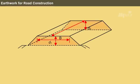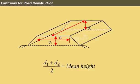The depth of the two sides, that is d1 and d2, is added and divided by 2 to get the mean height.